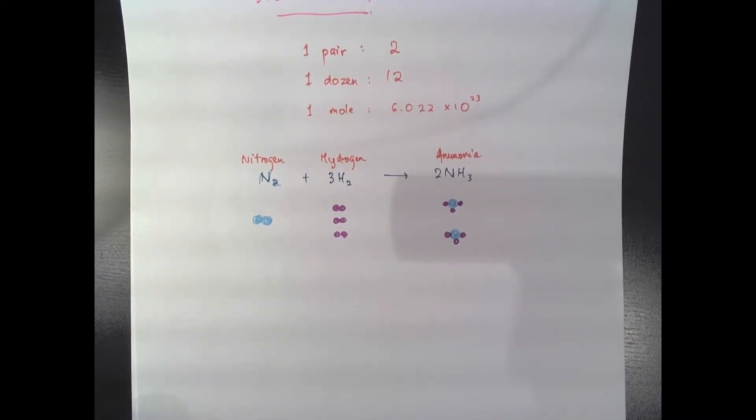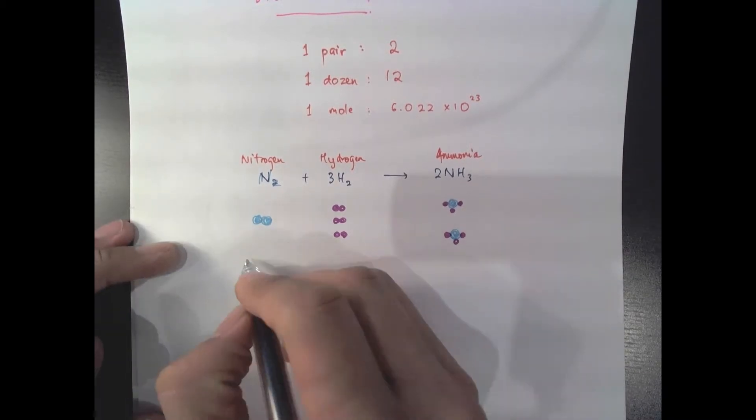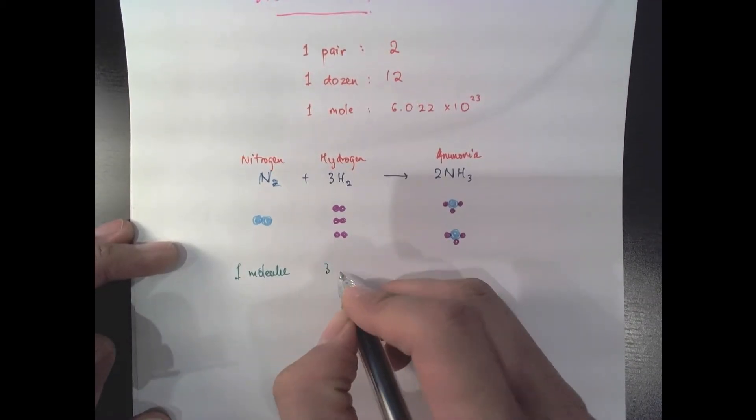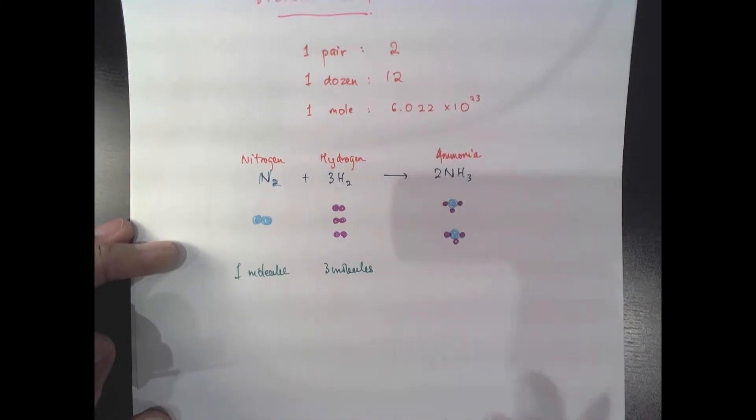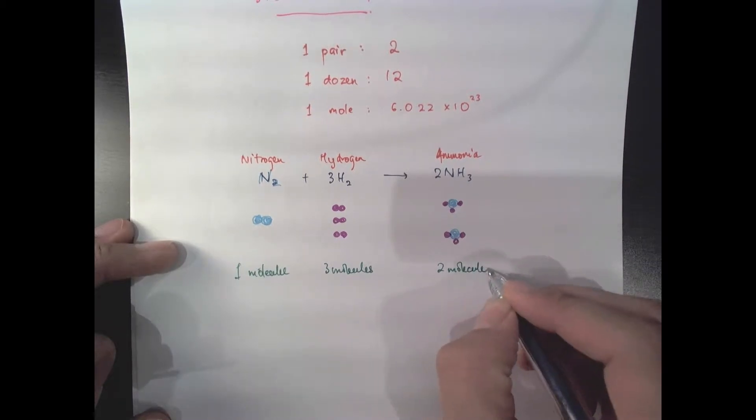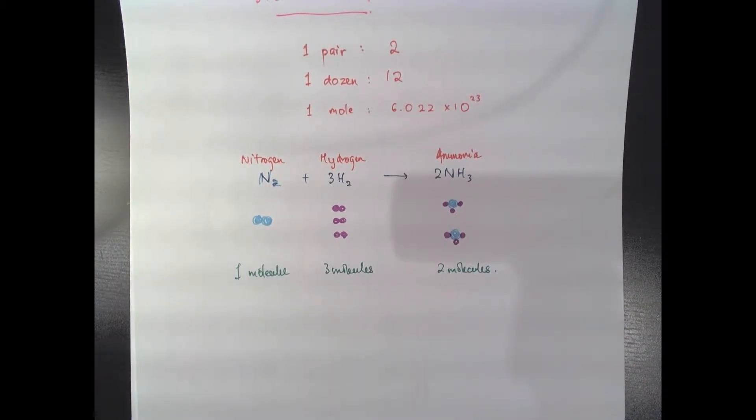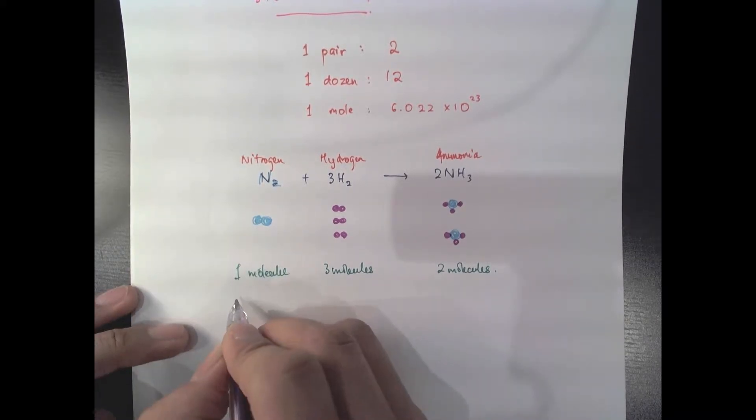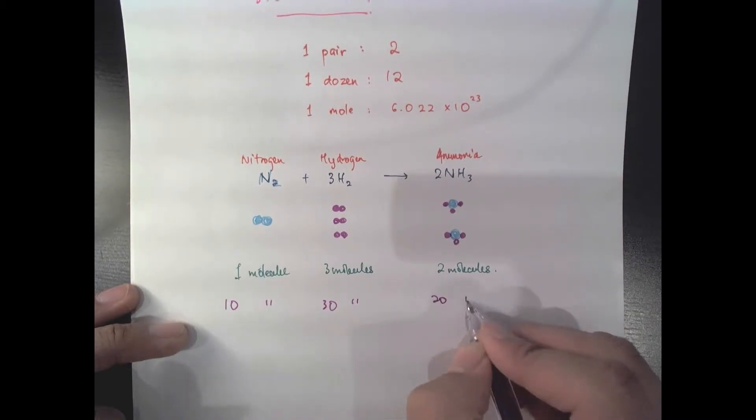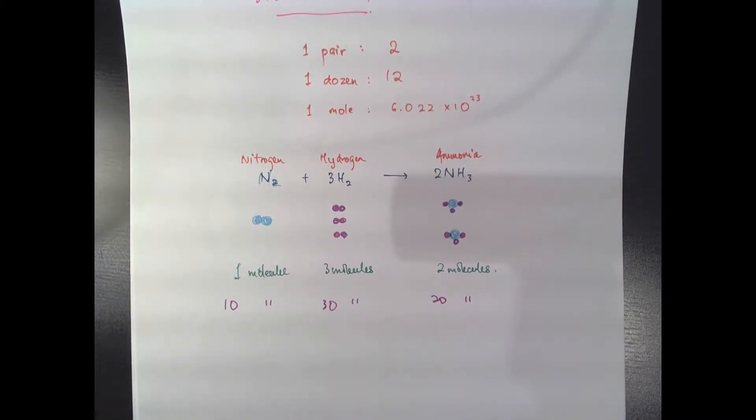So what this equation is saying is if I have one molecule of nitrogen that's going to react with three molecules of hydrogen and that's going to give me two molecules of ammonia. Likewise, if I had, let's say 10 molecules of this, that's going to react with 30 molecules of that, that's going to give me 20 molecules of that. So all I've done is multiply that by 10.